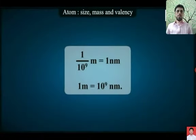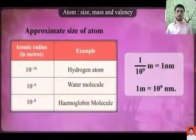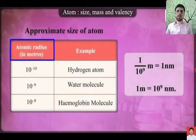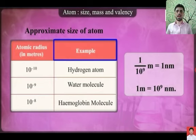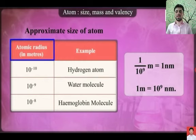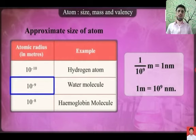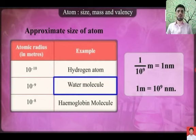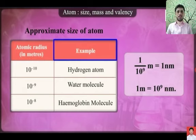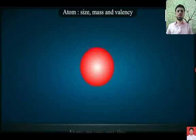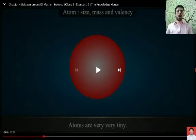The relation between meter and nanometer is: one meter is equal to 10 to the power of 9 nanometers. The approximate atomic radius of a hydrogen atom is 10 to the power of minus 10 meters, for a water molecule it is 10 to the power of minus 9 meters, and for a hemoglobin molecule it is 10 to the power of minus 8 meters. The atomic radius varies according to different molecules and atoms.